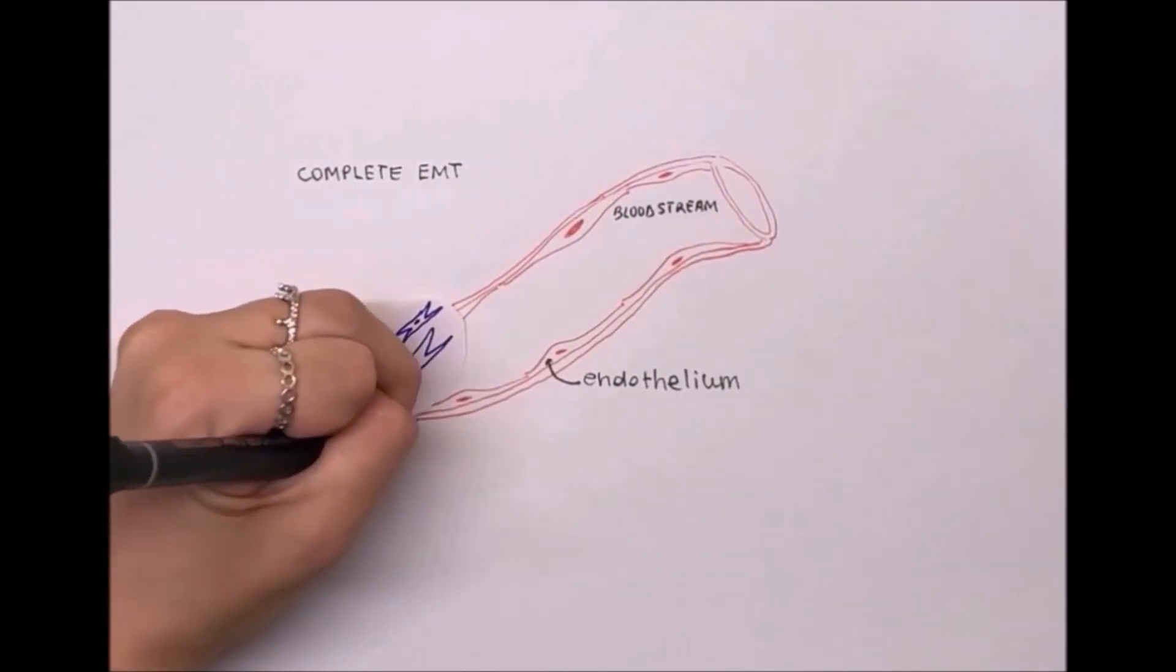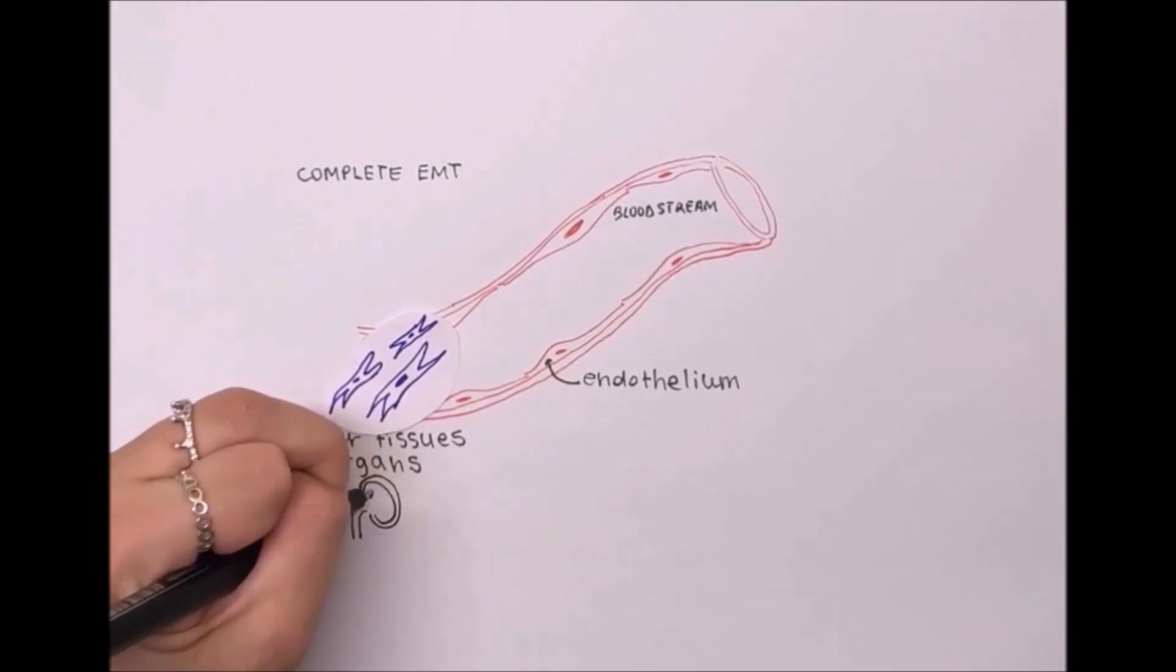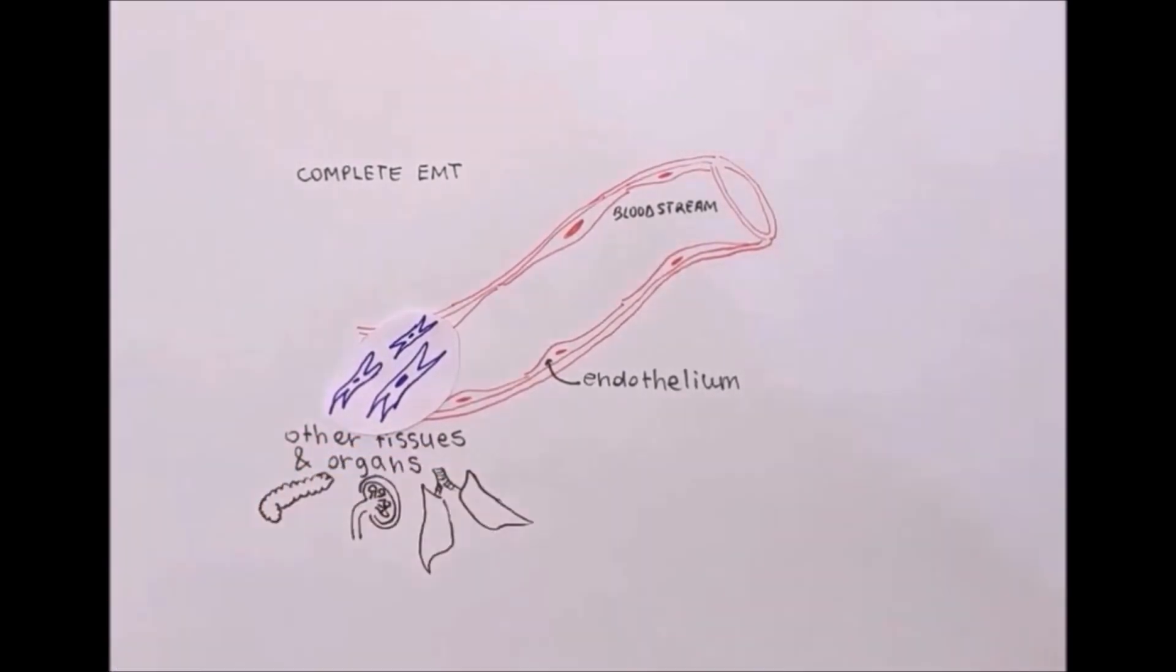They can use single cell colonization, that means individual cells complete EMT and then migrate to the surrounding tissue, or collective colonization, where they, as a cluster, detach from epithelial tissue and then invade other tissues.